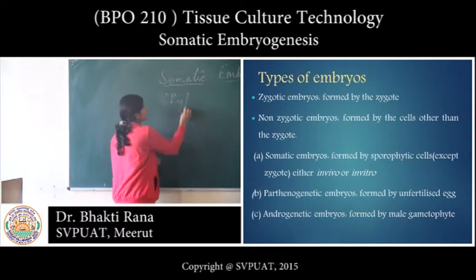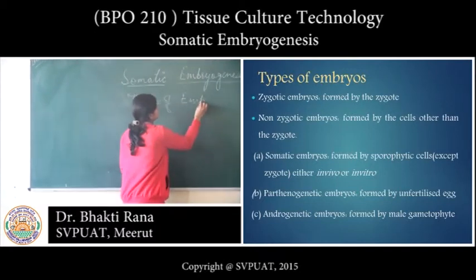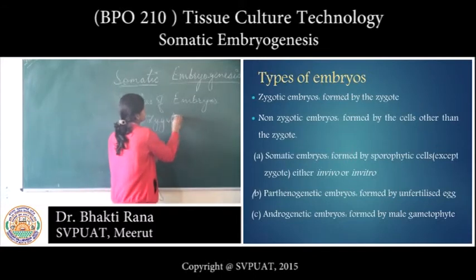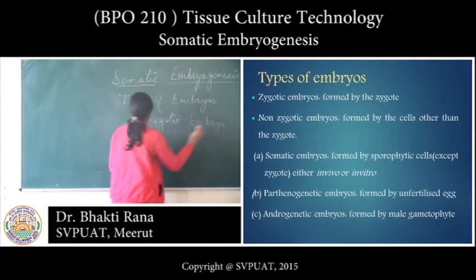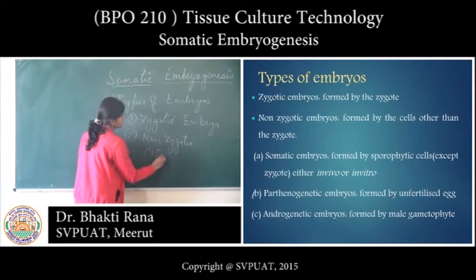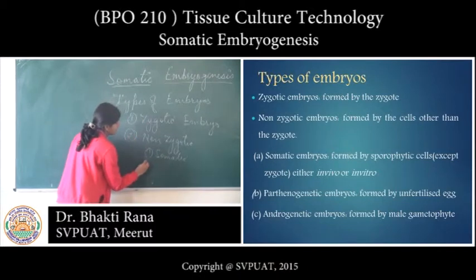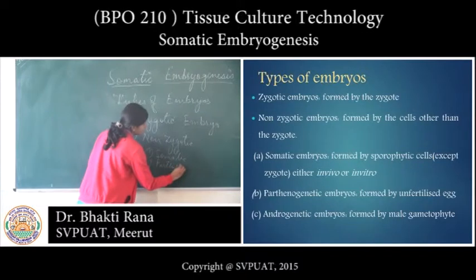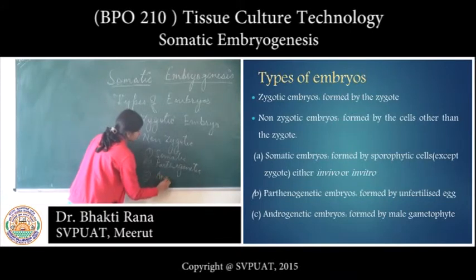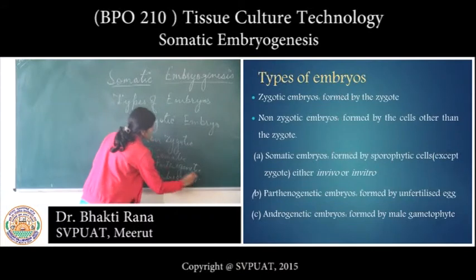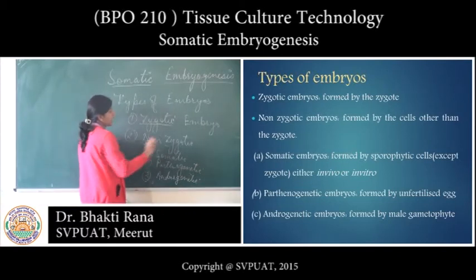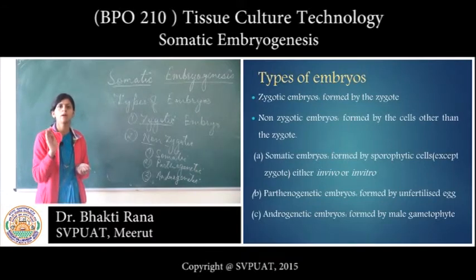There are types of embryos. The first is zygotic embryo and the second is non-zygotic, which is further divided into somatic, parthenogenetic, and androgenetic. Zygotic embryos are produced from the zygote, and non-zygotic embryos are not produced from the zygote but from other plant cells.